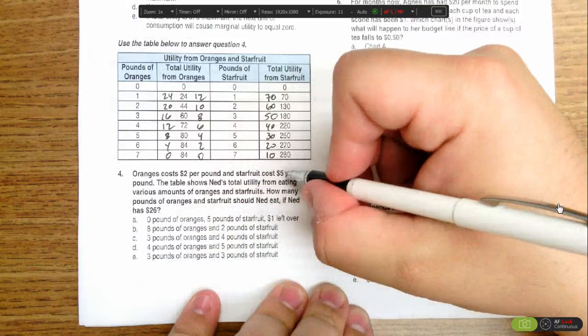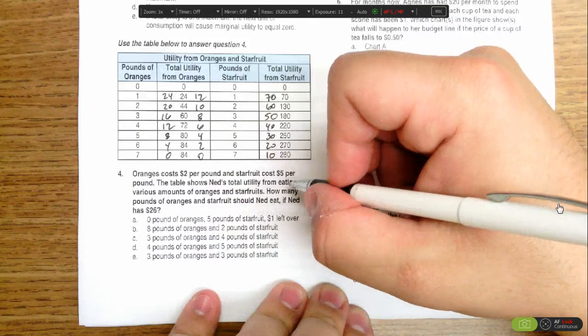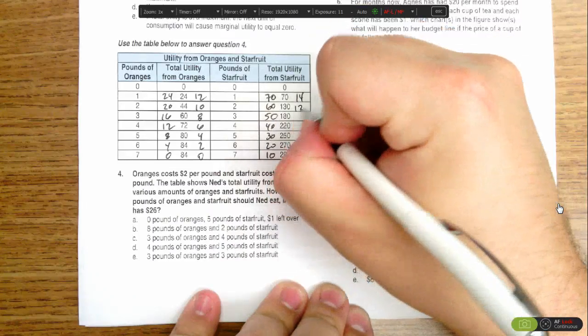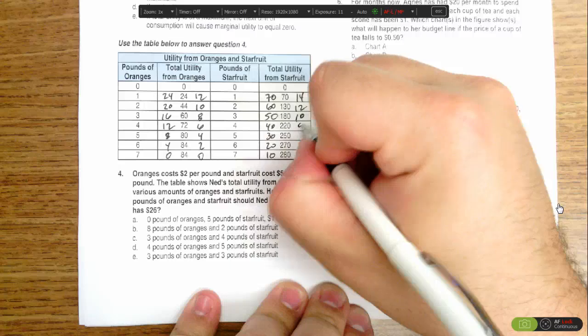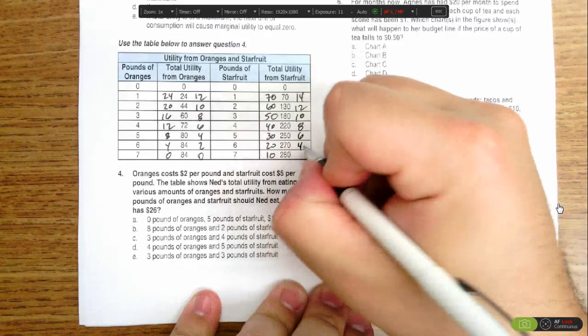Star fruit costs $5 per pound. So 70 divided by 5 is 14, and then 12, 10, 8, 6, 4, and 2.